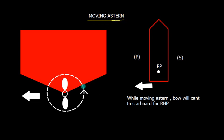As the vessel is moving astern, the propeller is turning anti-clockwise. That means the wheeling effect or transverse thrust is going to act on the left-hand side or the port side. As the vessel is moving astern, the pivot point is aft. So the transverse thrust is acting on the port side, the bow will cant to starboard. We can say while moving astern, the bow will cant to starboard for right-handed propeller.